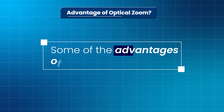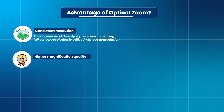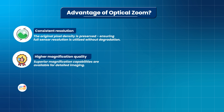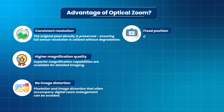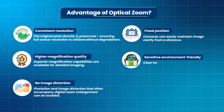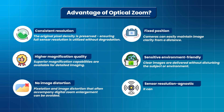Advantages of optical zoom include consistent resolution — the original pixel density is preserved, ensuring full sensor resolution without degradation. It offers higher magnification quality for detailed imaging and low image distortion, avoiding the pixelation that often accompanies digital zoom. Fixed-position cameras can maintain image clarity from a distance, delivering clear images without disturbing the subject or environment. It is also sensor resolution agnostic and can be used across various camera types.